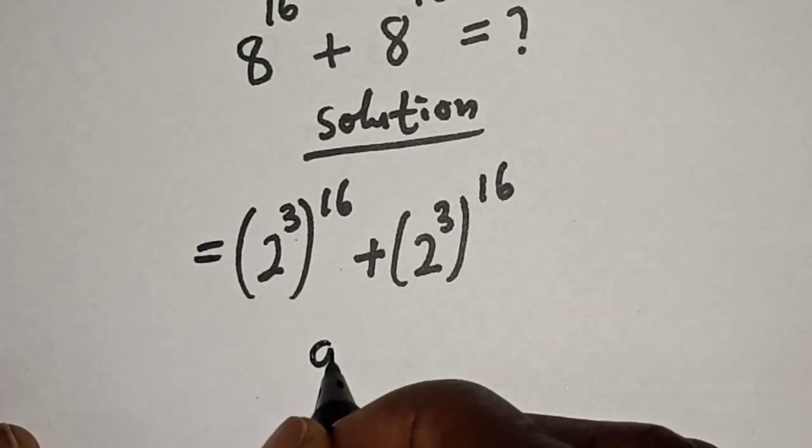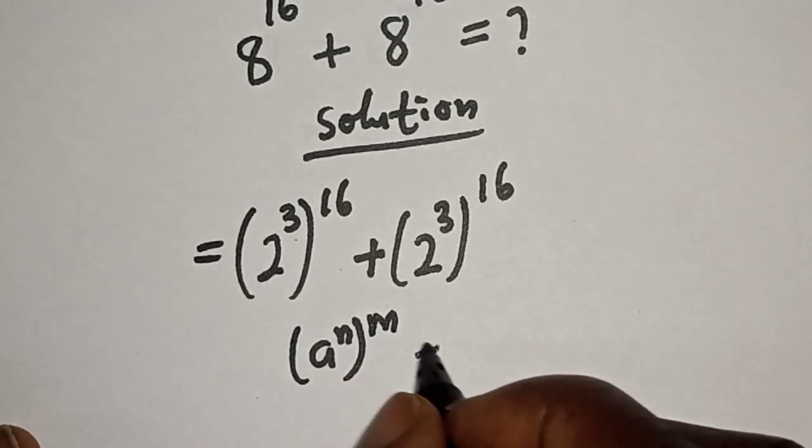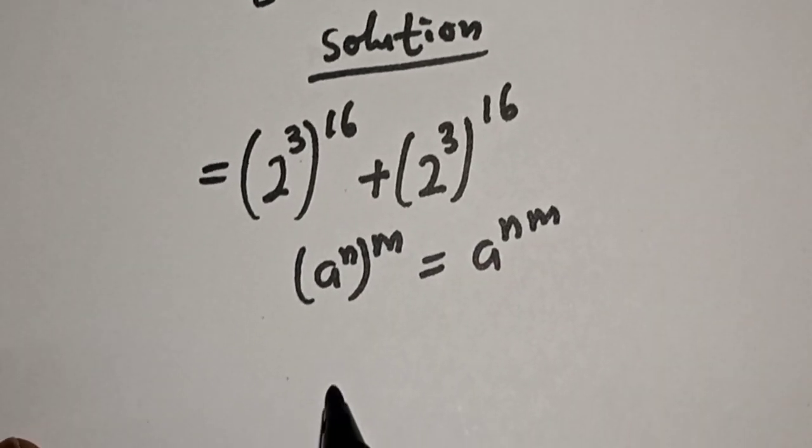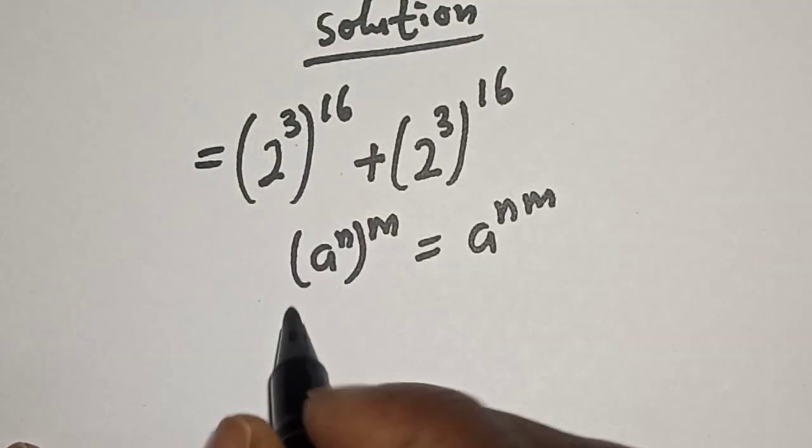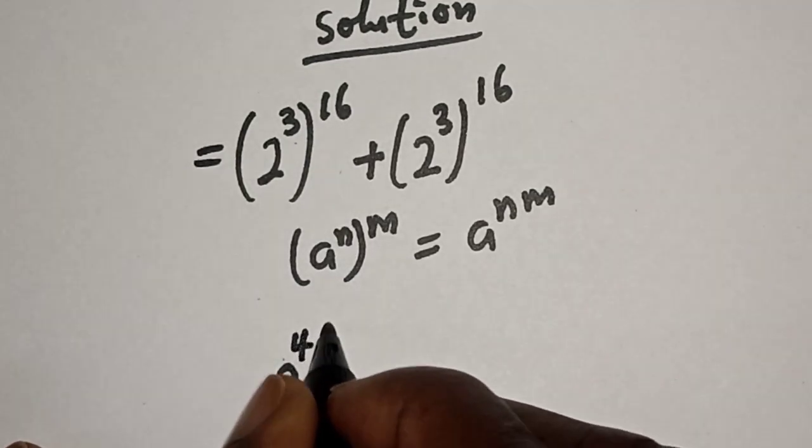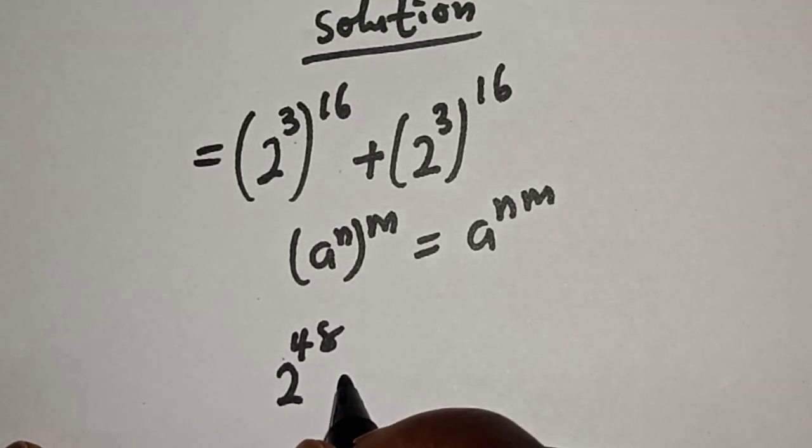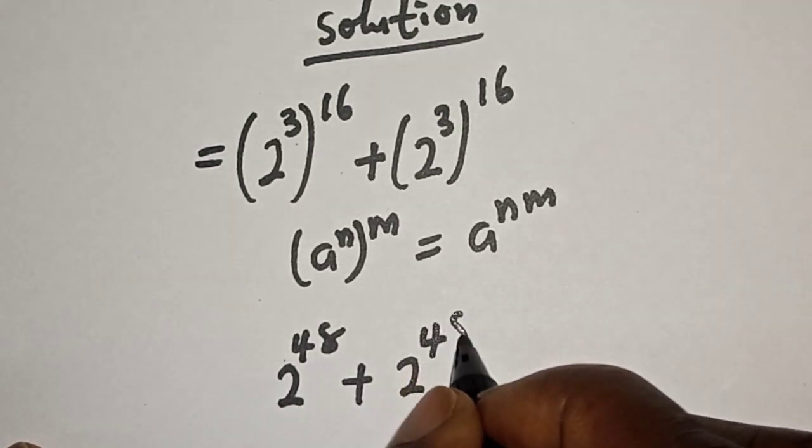Take note of this rule: a raised to power n raised to power m is equal to a raised to power n times m. So this is 2 raised to power 3 times 16, which is 48, plus 2 raised to power 48.